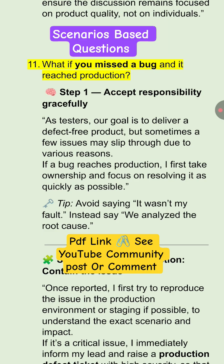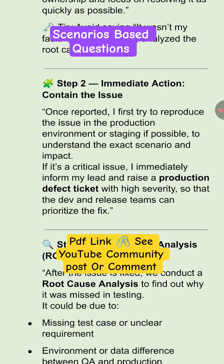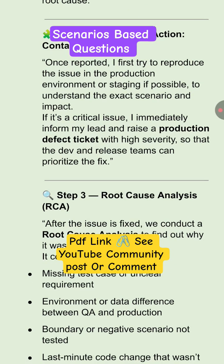In step two, once the bug is reported, we have to first try to reproduce the issue in the production environment or staging if possible, to understand the exact scenario and the impact. If it is a critical issue, then we have to immediately inform our lead and log the production defect with a higher severity so that the development and release team can prioritize the fix.